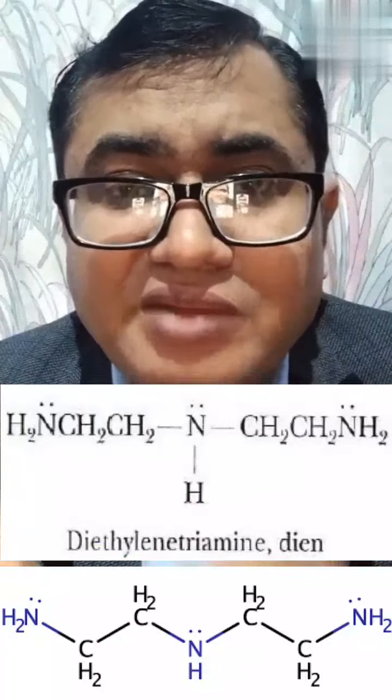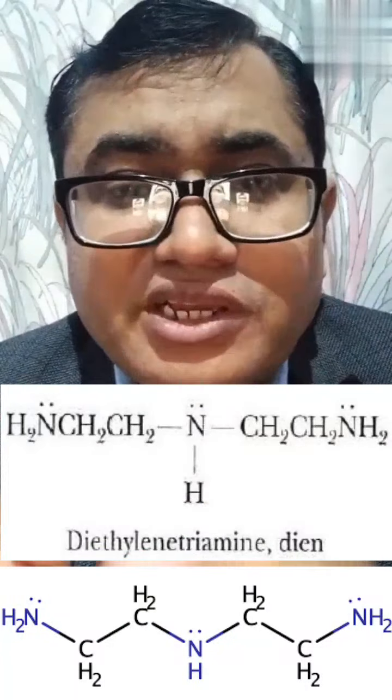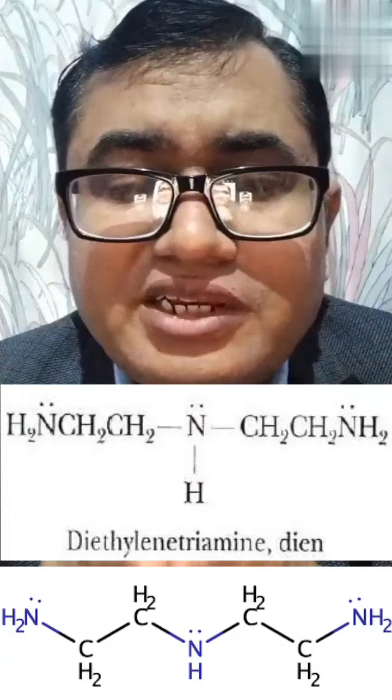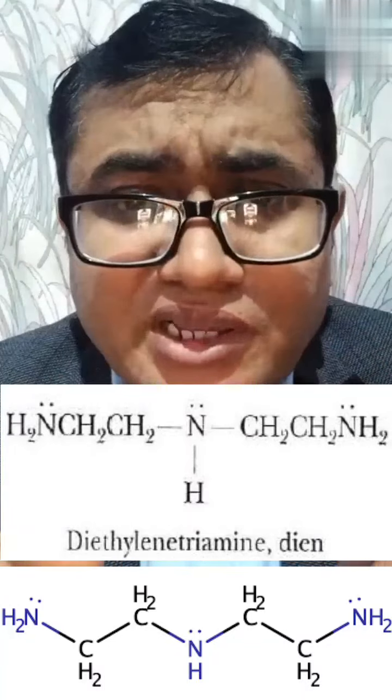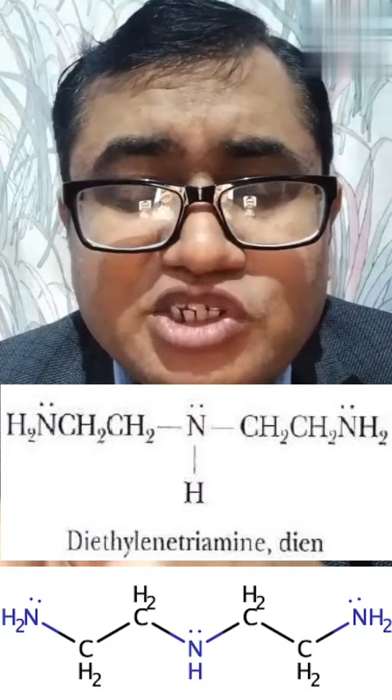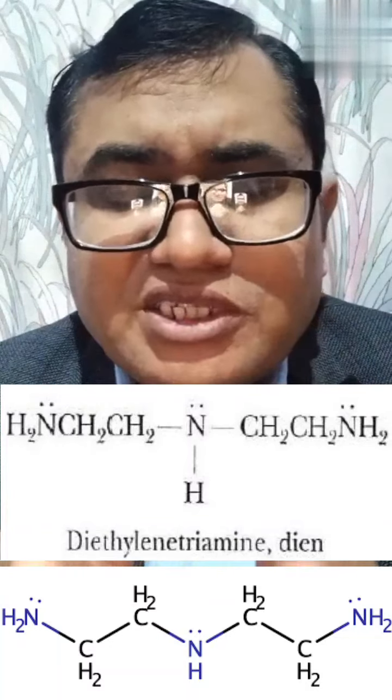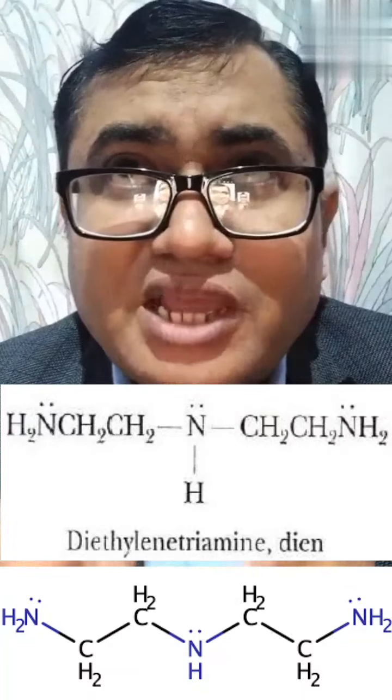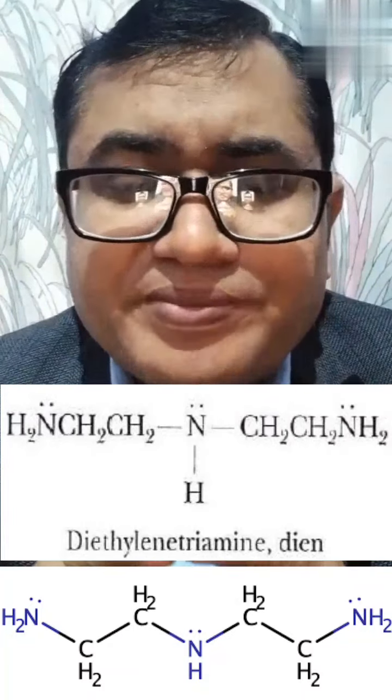The third type of ligand is the tridentate ligand — ligands having three donor atoms or three ligating atoms are called tridentate ligands. An example is diethylenetriamine (dien), which has three nitrogen atoms that can donate lone pairs to the central metal atom to form coordinate bonds.